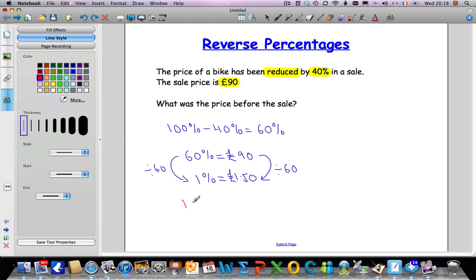I have to work out what 100% of the original price was, which was the original price. And if I know what 1% is, to get 100%, I need to times it by 100. 1 times 100 gives me 100. And I've got to do the exact same thing on the other side. I'm going to multiply by 100 as well. And £1.50 multiplied by 100 gives me £150. So I know that the original price was £150. And that is how we do a reverse percentage when we've had a price reduced.